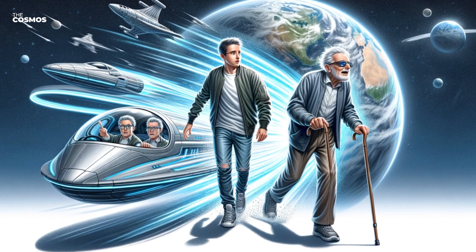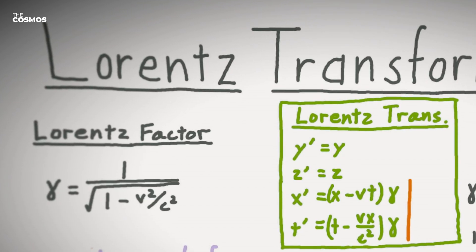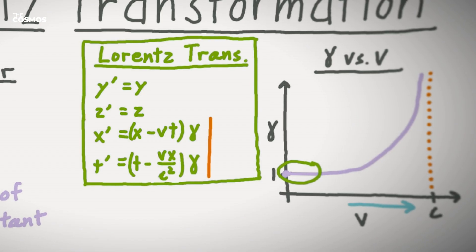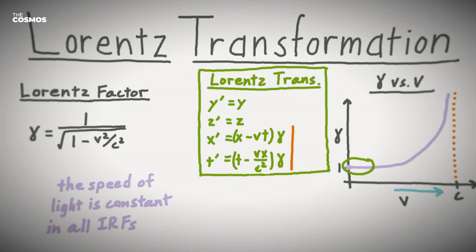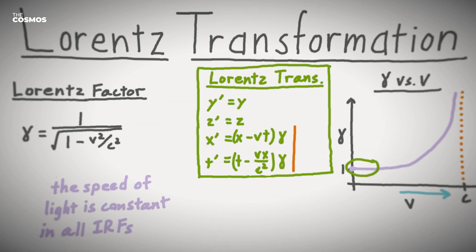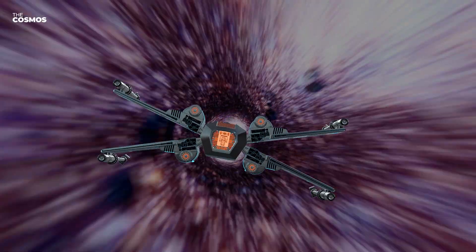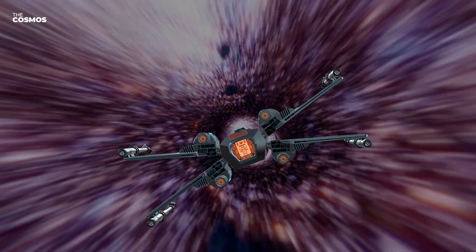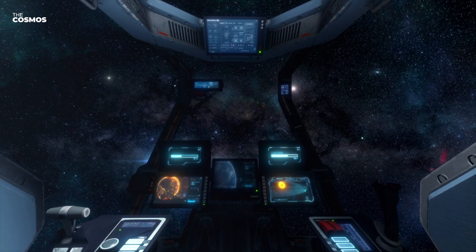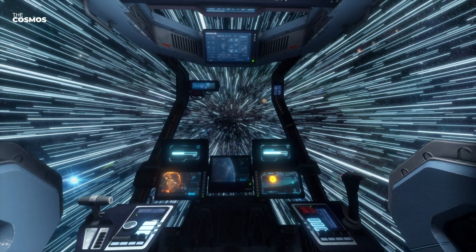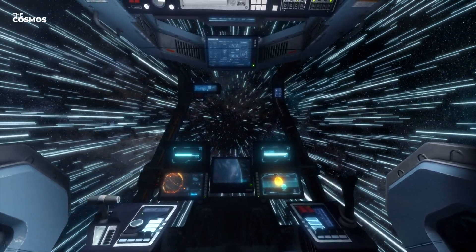Another crucial aspect of traveling at light speed is the Lorentz transformation, a set of mathematical equations that describe how measurements of space and time by two observers are related to their relative motion. According to these equations, as an object's speed increases towards the speed of light, its length contracts along the direction of motion. This phenomenon, known as length contraction, means that distances in space appear much shorter for a traveler moving at near light speeds.